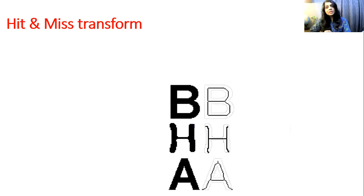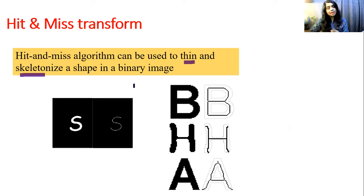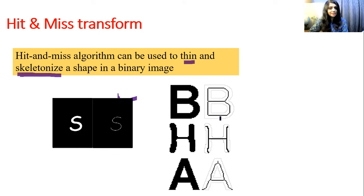Hit and miss algorithm can be used to thin and skeletonize a shape in a binary image. It is specifically used for binary images — meaning images with only black and white, that is, only two levels: zero and one. It is used for detecting patterns, thinning an image, or skeletonizing a shape. For example, the letters B, H, A can be skeletonized. This is the objective and application of hit and miss transform.